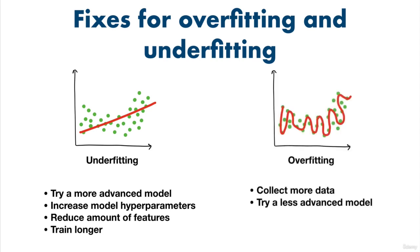To reduce overfitting, useful solutions are to collect more data. More data will provide more potential patterns for a model to find, and thus lower the potential for it to find them all. Or you could try to use a less advanced model — it's a possibility the model you're using is too good at learning and it models your data too well. Be cautious of models performing too well, as they might lead to incorrect predictions. Remember, no model is perfect, so be sure to check your good results as much as you check your poor results.